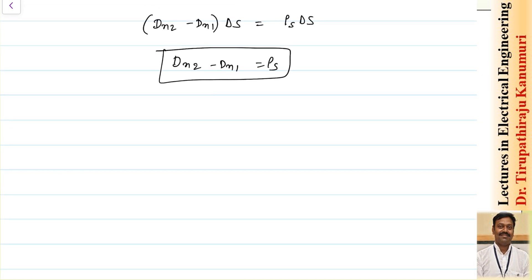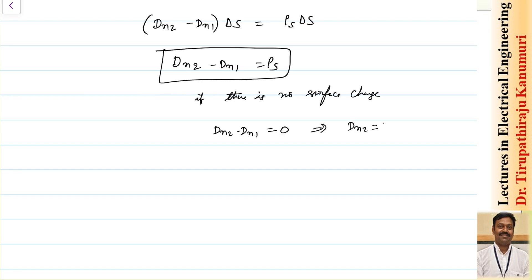If we assume the interface has no surface charge, then dn2 minus dn1 equals 0, or dn2 equals dn1. This is the second boundary condition.